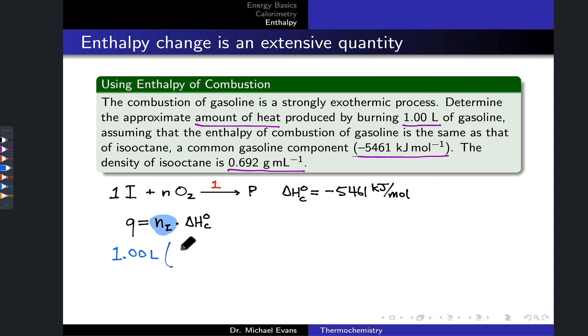That's just metric prefixes in action. Then I'm going to multiply by the given density, 0.692 grams per milliliter, to figure out the mass I'm dealing with. I could calculate that number, or I could notice that at this point I'm dealing with mass units. Ultimately I need to get to moles. What I'm trying to calculate is the moles of isooctane.